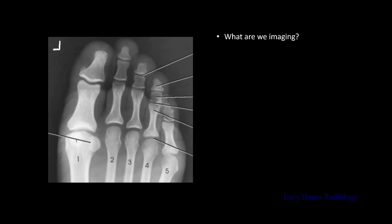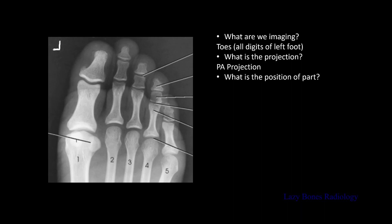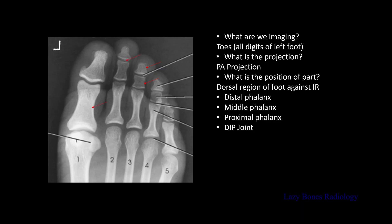Now let's practice. What are we imaging? This is an image of all the toes of the left foot. What is the projection? This is a PA projection. What is the position of the part? The dorsal region of the foot is against the IR. Now let's practice your anatomy: the distal phalanx, middle phalanx, proximal phalanx, the DIP joint, PIP joint, the IP joint, the metatarsal, the metatarsal phalangeal joint or the MTP joint, and lastly the sesamoids. As you can see here on this picture, a 15-degree angulation was not necessary because of the natural curvature of the toes. You are able to see all the joint spaces clearly.